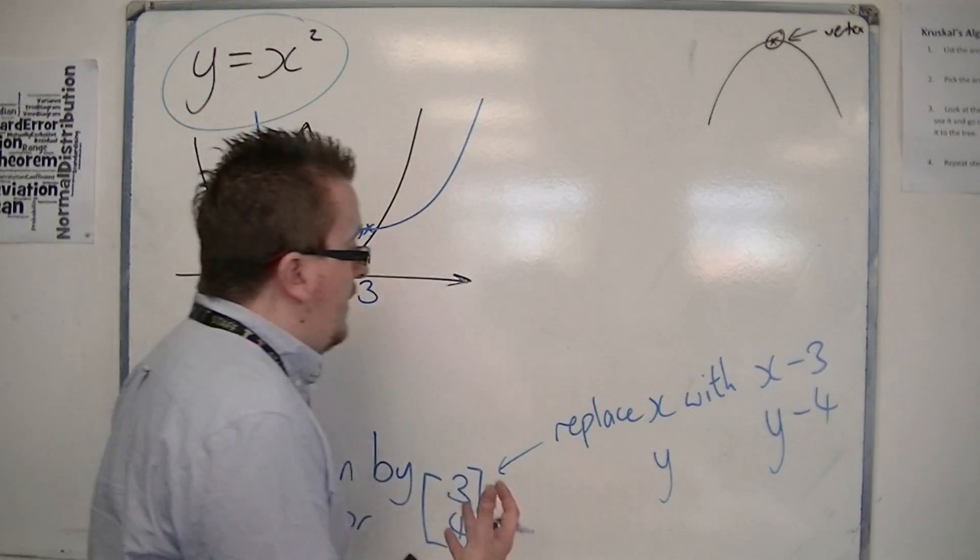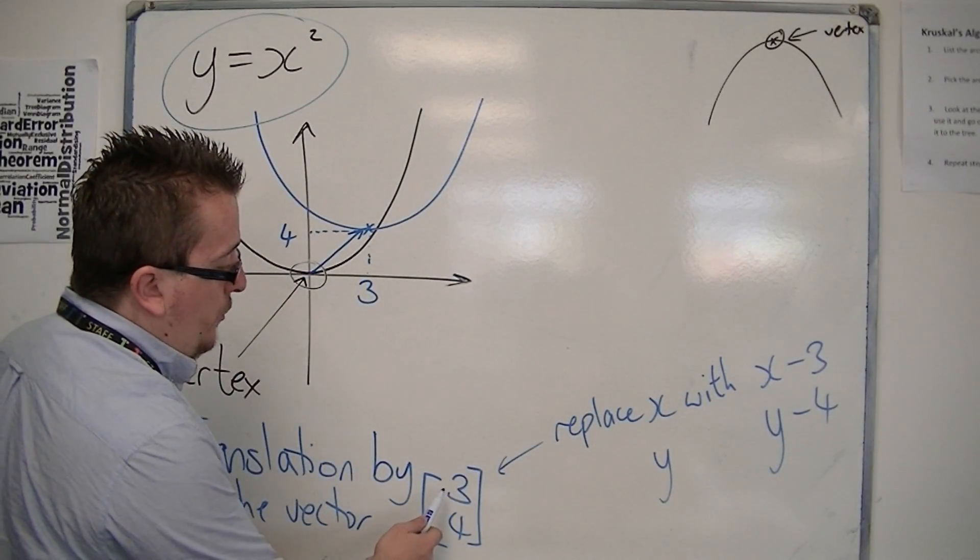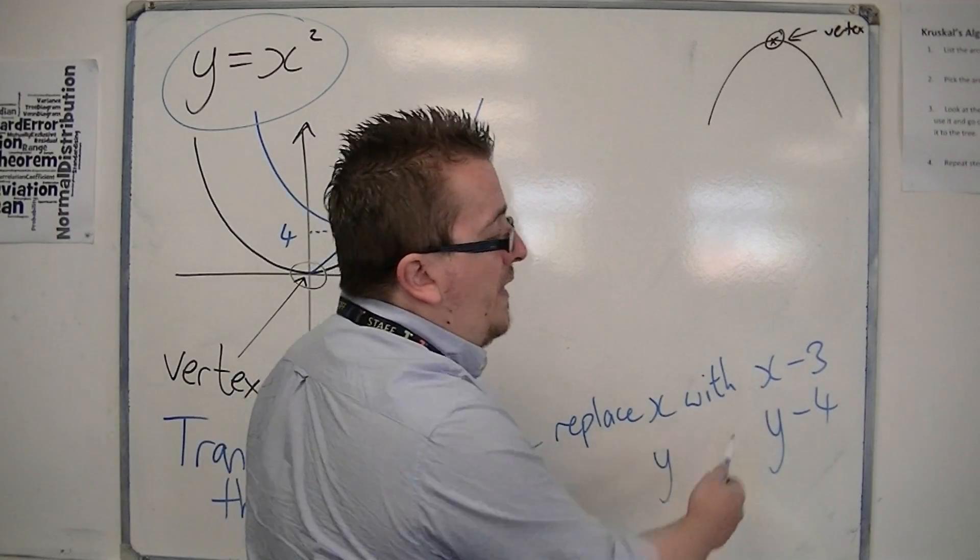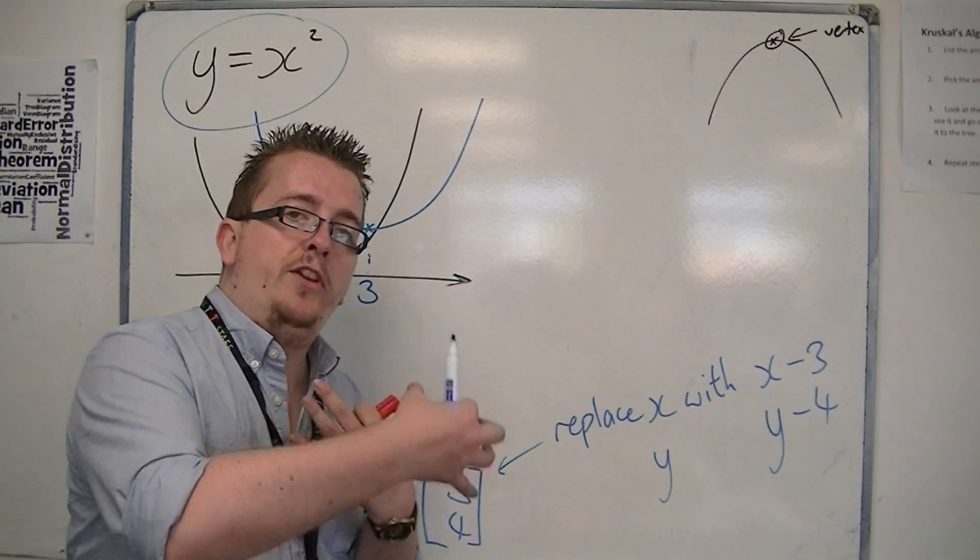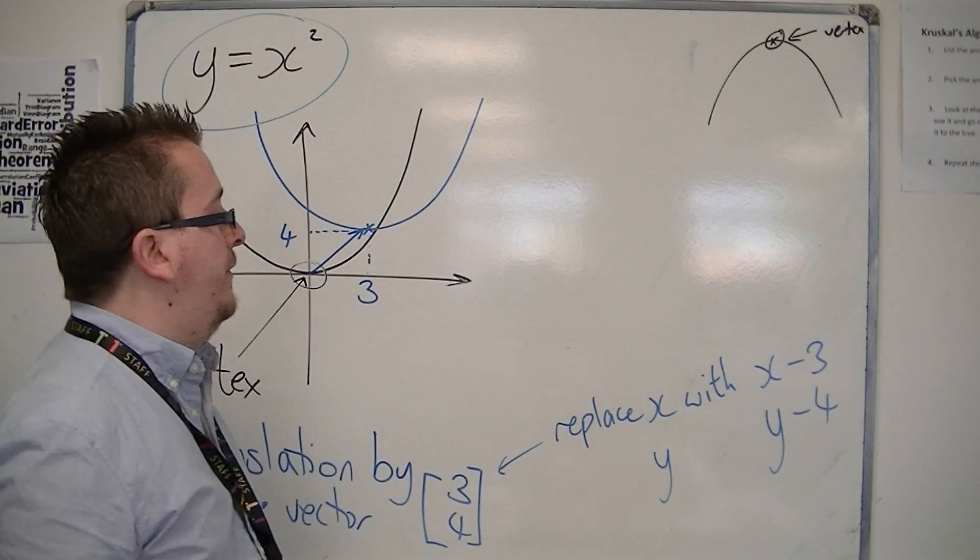So if this had been minus 3, you'd replace the x with x plus 3. So you always use the opposite sign.